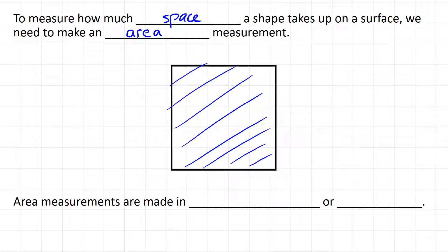Because this is a different type of measurement than a linear measurement, it's going to have different units. So area measurements, because they're covering the space that's covered, we call the units square units.